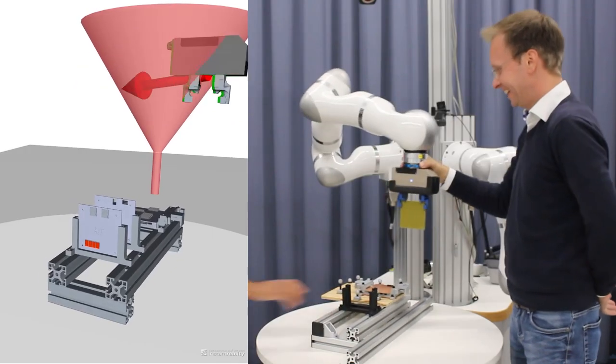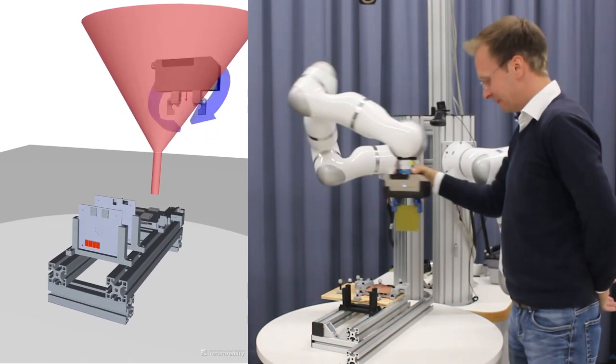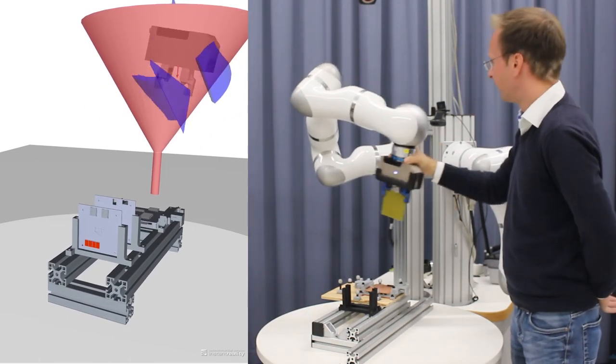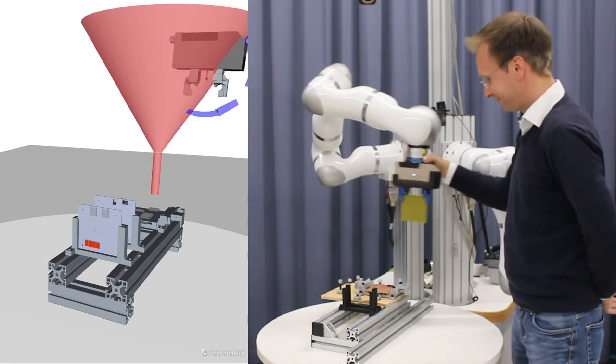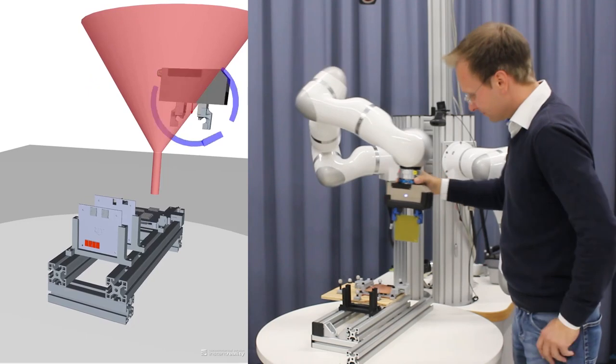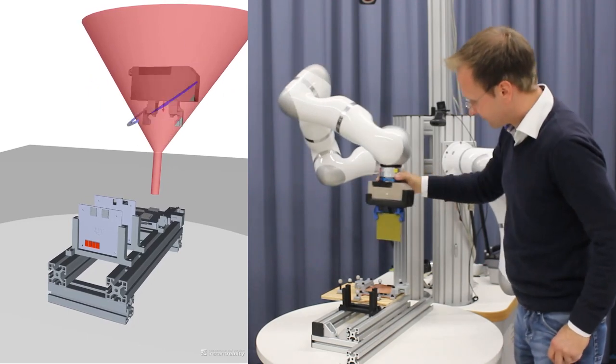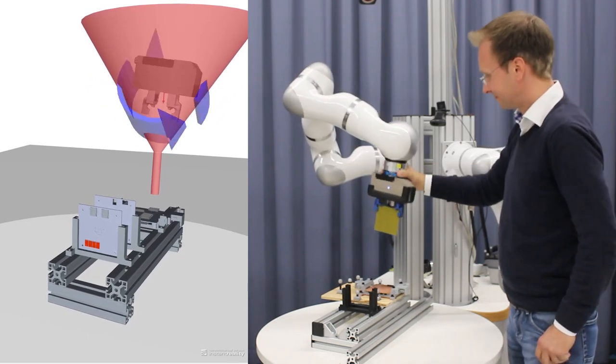To support the operator and reduce their physical and mental workload, we introduce virtual fixtures. Virtual fixtures are forces and torques that act on the slave robot to help correct its position and orientation to complete the task in hand.